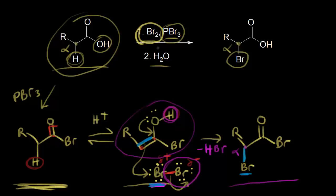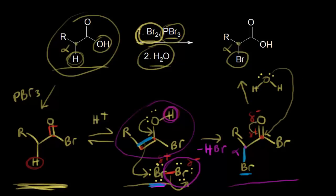Now we're ready for the second step of the HVZ reaction, which is where we add water. Water has two lone pairs of electrons and functions as a nucleophile; the carbonyl carbon is electrophilic. Water attacks that carbon, the electrons kick off onto the oxygen, and then when the electrons move in to reform the carbonyl, the bromide anion leaves as a leaving group. The OH replaces the bromine, and we lose HBr — converting our alpha-bromo acyl bromide into our final product.